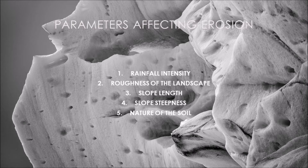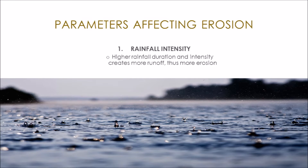The rates of erosion are affected by rainfall intensity, the roughness of the landscape, the slope, the length of the slope, and the nature of the soil. A higher rainfall intensity increases runoff and erosion, as well as the longer duration of the rain event. A larger density of rocks and vegetation on the surface decreases runoff and erosion.